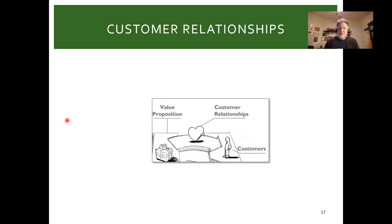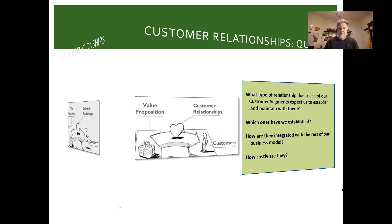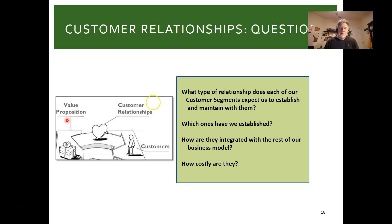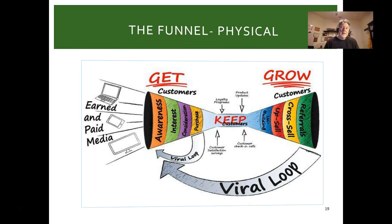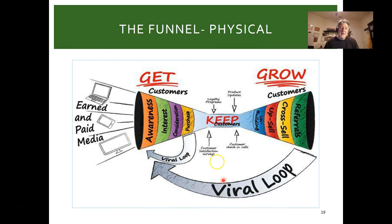Customer relationships — or how we create 'love.' The key questions: what type of relationship do we have established, how do we integrate them with the rest of the model, and how costly will they be? It costs money to do three things — tied to AIDA: Awareness, Interest, Consideration, and then Decision or purchase. The 'A' is acquisition.